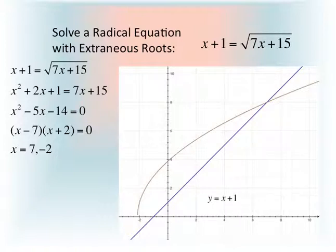We're first graphing the left side of the equation, y equals x plus 1, which is linear with a y-intercept of positive 1 and a slope of 1. The other curve is y equals the square root of 7x plus 15, which has a restricted domain. In this case, x must be greater than or equal to negative 2 and one-seventh. You can see that this curve seems to end just a little past negative 2, and that's where the domain restriction occurs.